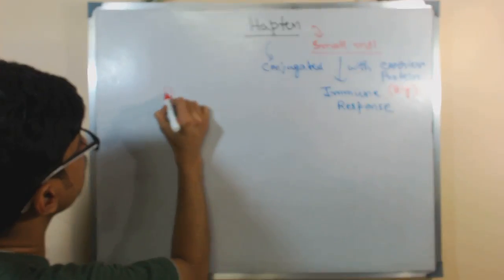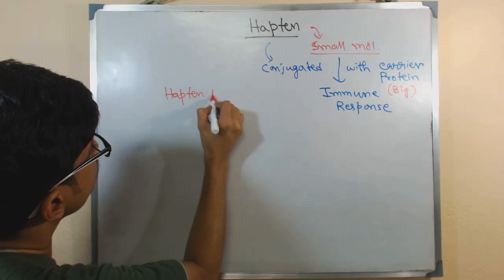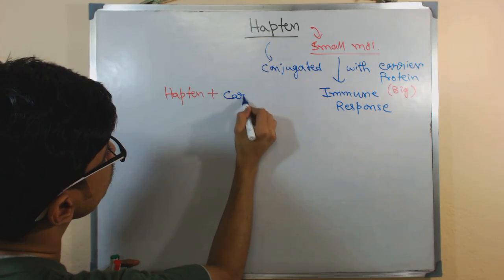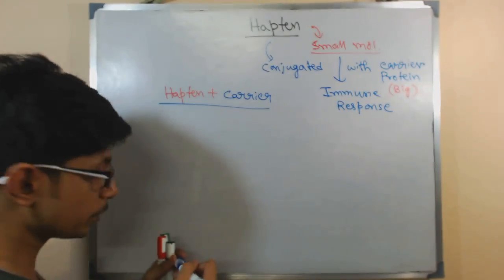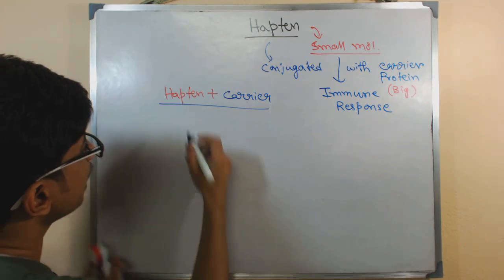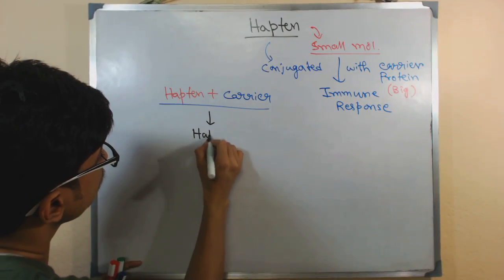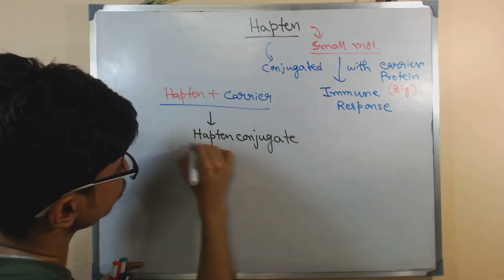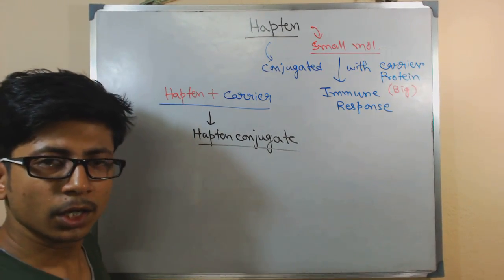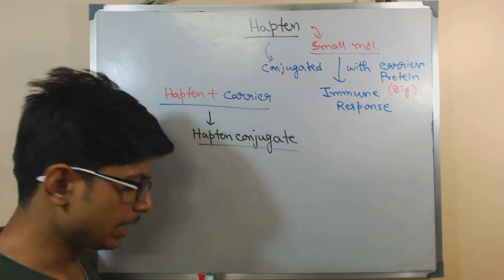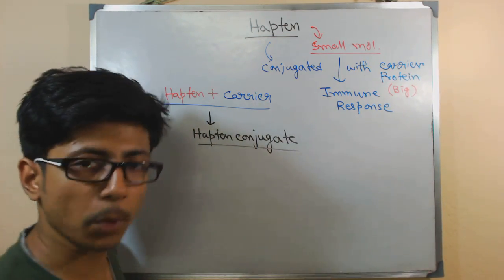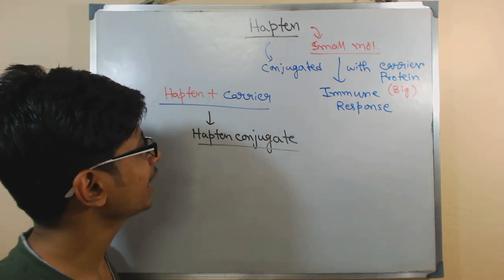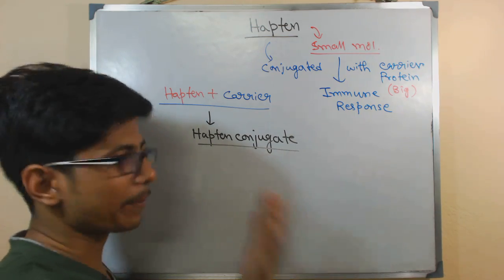And once this hapten is with the carrier protein, we call both of them together as hapten conjugate or hapten carrier conjugate. So this hapten molecule, very small molecule, can produce a triggered immune response only if it is attached with a big carrier protein. That is the difference between a hapten and antigen.